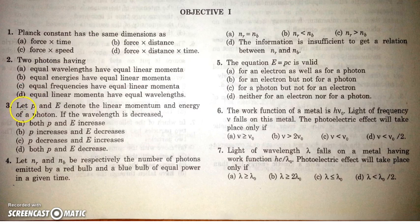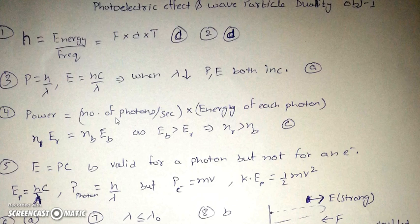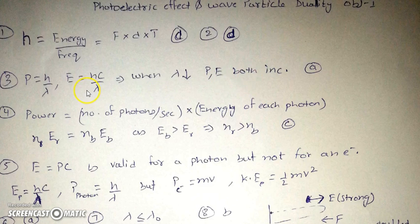Question three: let P and E denote the linear momentum and energy of a photon. What will happen if its wavelength is decreased? Since energy E = hc/λ and momentum P = h/λ, when lambda is decreased, both P and E will increase, as per these expressions.